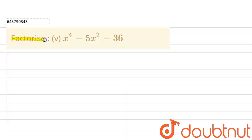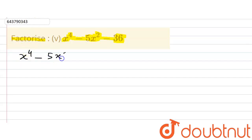The given question says: factorize x raised to the power 4 minus 5x raised to the power 2 minus 36. We are supposed to factorize this expression. We are going to use the method of splitting the middle term to factorize this expression.